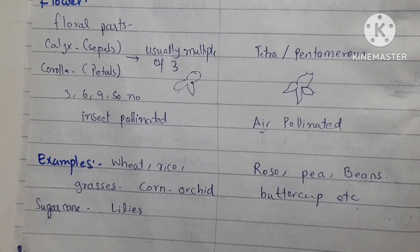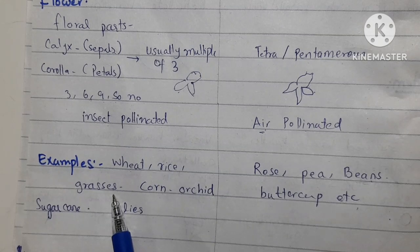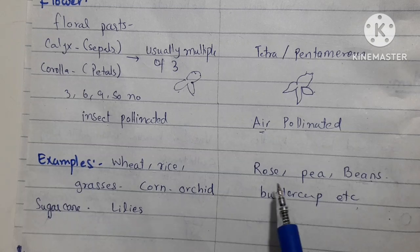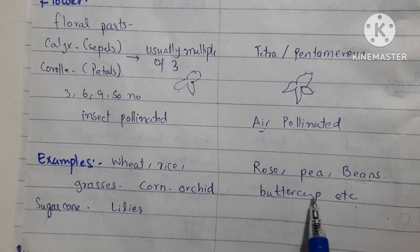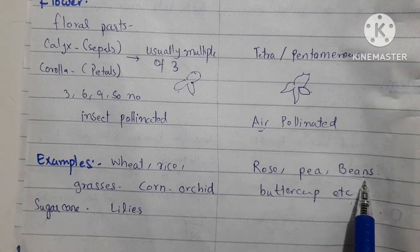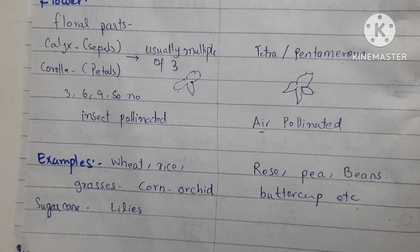At the end, let's keep some examples in mind, as this will help clarify the basic difference between monocot and dicot. Wheat, rice, grasses with long narrow leaves and sharp ends, corn, orchids, sugarcane, and lilies are all examples of monocot plants. Rose, peas, beans, and buttercups are all examples of dicot plants. If you remember beans you will remember dicot, and if you remember corn or grasses you will remember monocot. In today's lecture we studied the difference between monocot and dicot in terms of seeds, leaves, stems, roots, and flowers. There are many questions on this topic in exams.